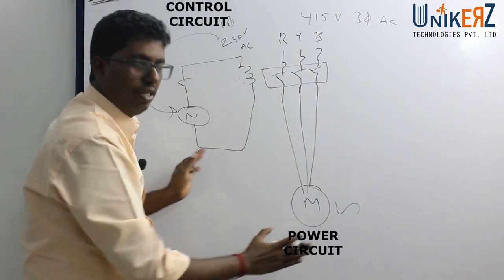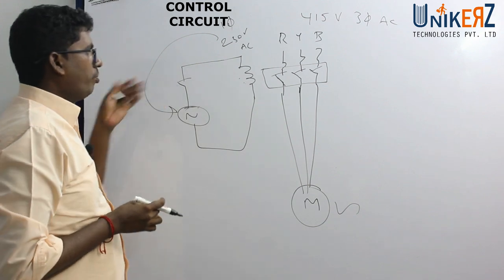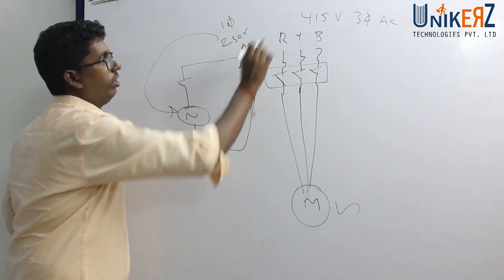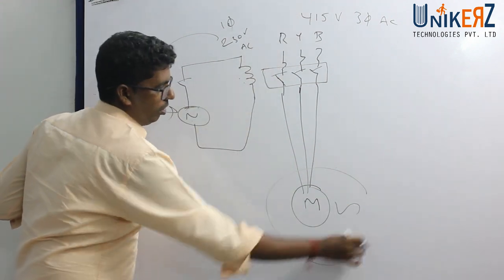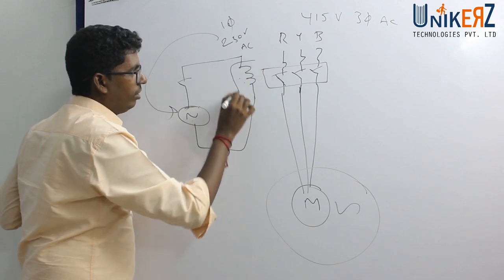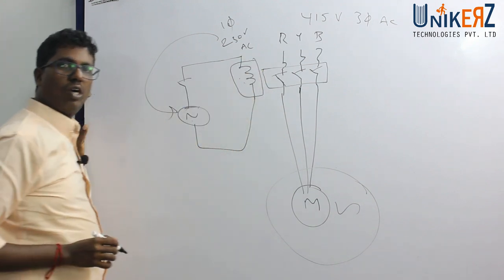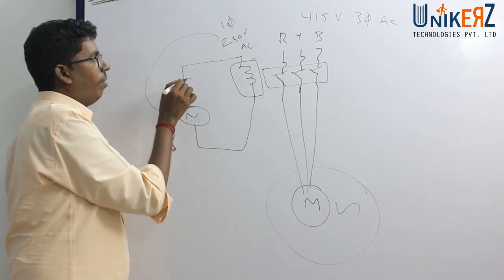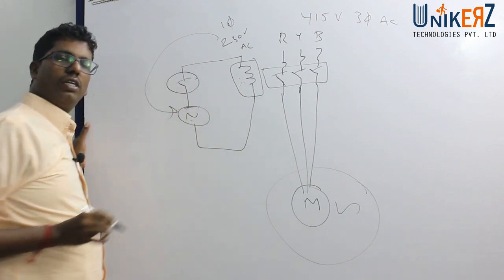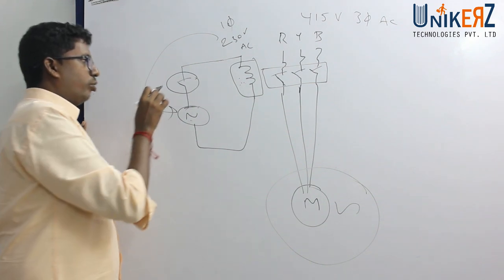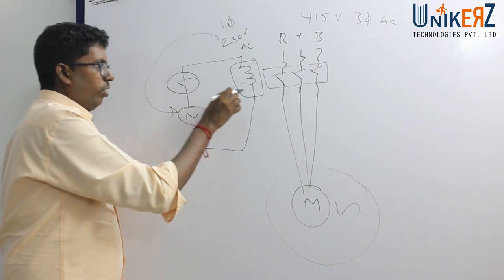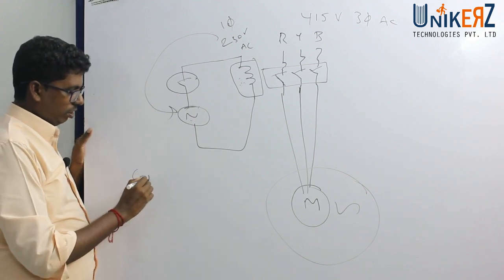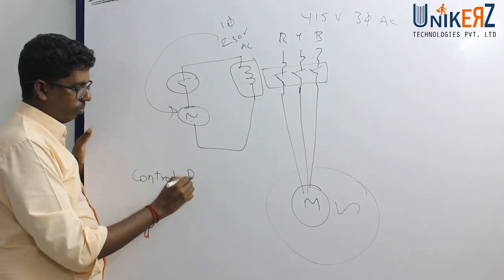Everything is the electrical circuit. This is the power source. Load — this is the load. If I am connected to the load, I use the power source. Then, control device — this is the control device. This is the power source, this is the load. What is the control device?